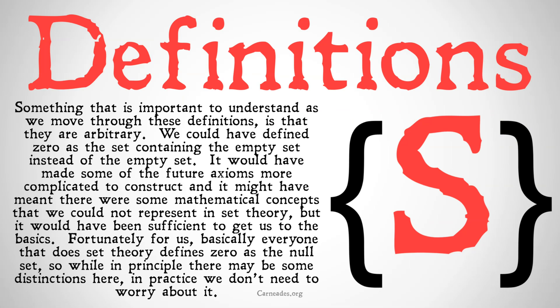Something that is important to understand as we move through these definitions is that they are completely arbitrary. We could have defined zero as the set containing the empty set instead of the empty set. It would have made some future axioms more complicated to construct, and it might have meant that there are some mathematical concepts we couldn't really represent in set theory. But it would have been sufficient to get us to the basics. Fortunately, basically everyone that does set theory defines zero as the null set, so in practice we don't really need to worry about it.